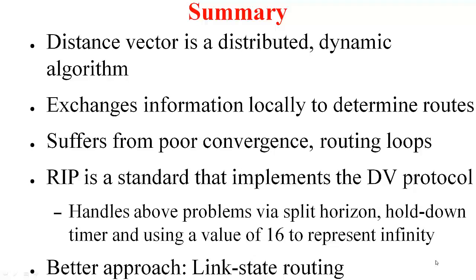So here is a summary of what we have seen in this video. Distance vector is a distributed dynamic algorithm that exchanges information locally to determine the least cost path between nodes. Unfortunately, it suffers from poor convergence and routing loops. There are certain partial solutions in the form of split horizon, hold down timer, and making infinity small. RIP is a standard that implements the distance vector protocol and handles some of these problems via these techniques. All said and done, it has convergence issues and can only be used over routing domains where the maximum hop between routers is under 16. The better approach is link state routing, which is what we will cover next.